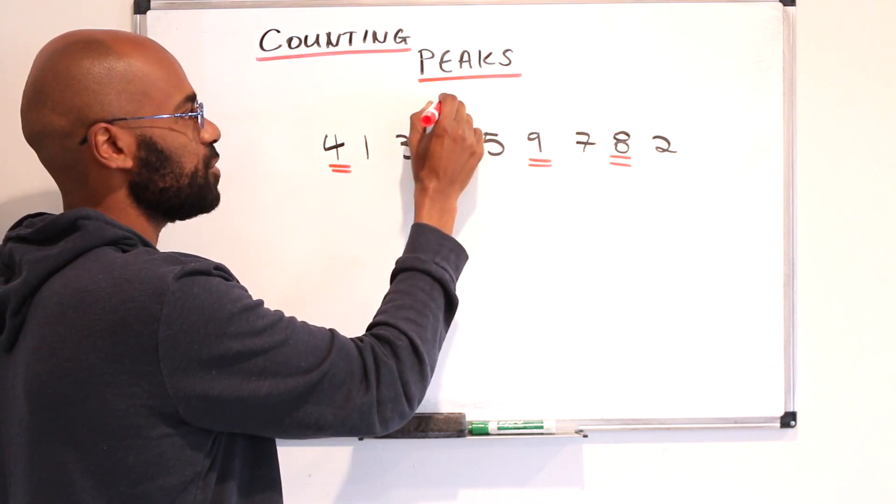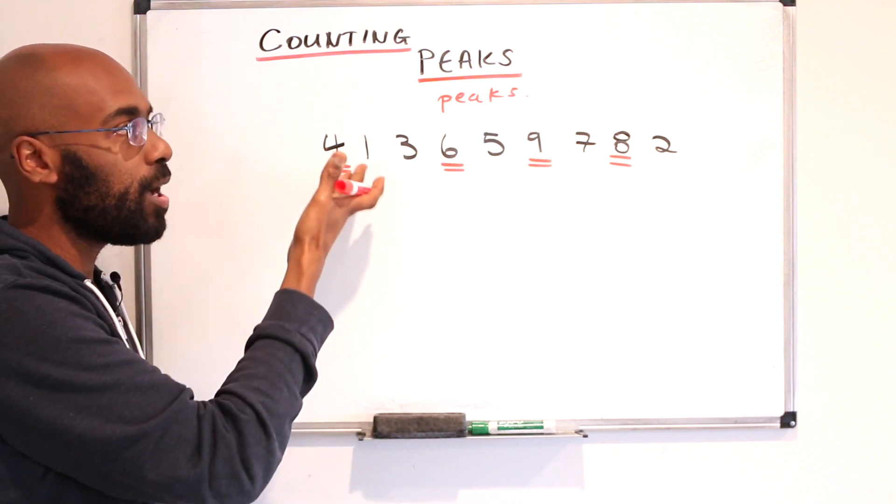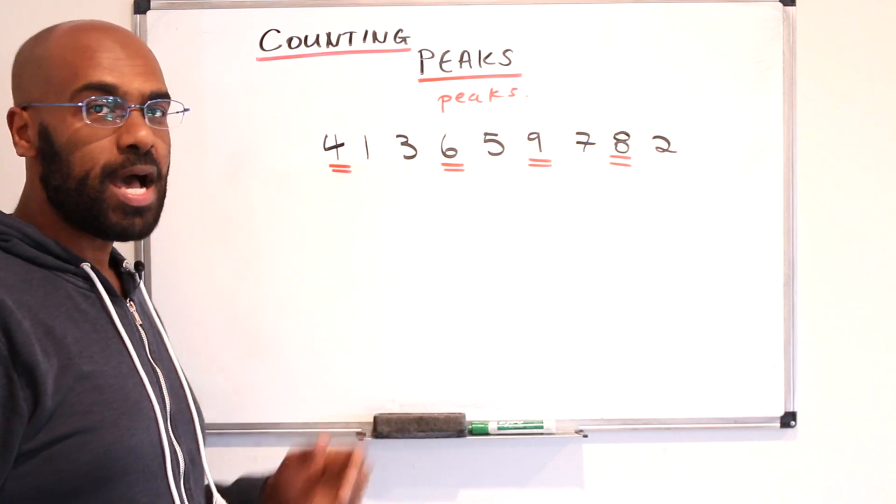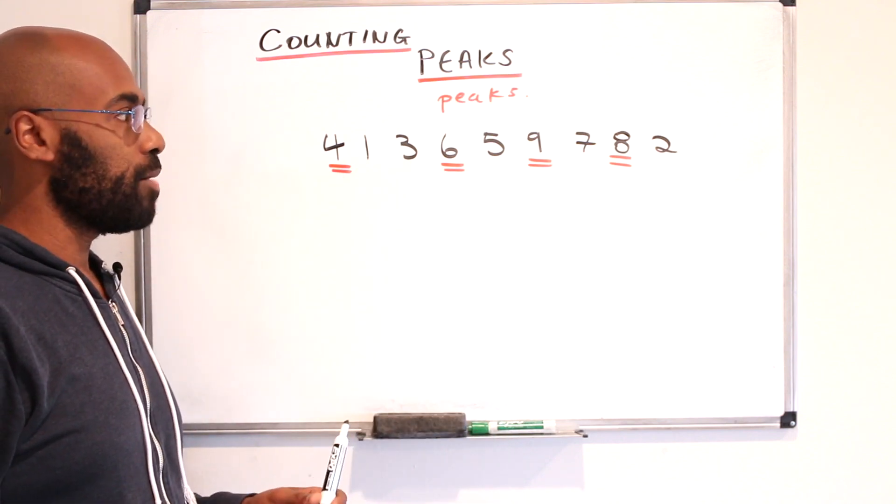We call these numbers peaks. So the question is, if we look at all possible rearrangements of the numbers 1 through 9, what's the average number of peaks in all the numbers among them?